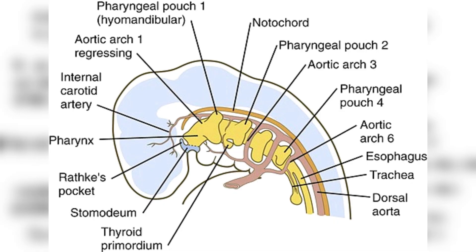The cyst arises from embryological remnants, specifically a persistent communication between the notochord and the nasopharyngeal mucosa. This tract, the pharyngeal bursa, can remain patent and lead to cyst formation, particularly when obstructed or inflamed.